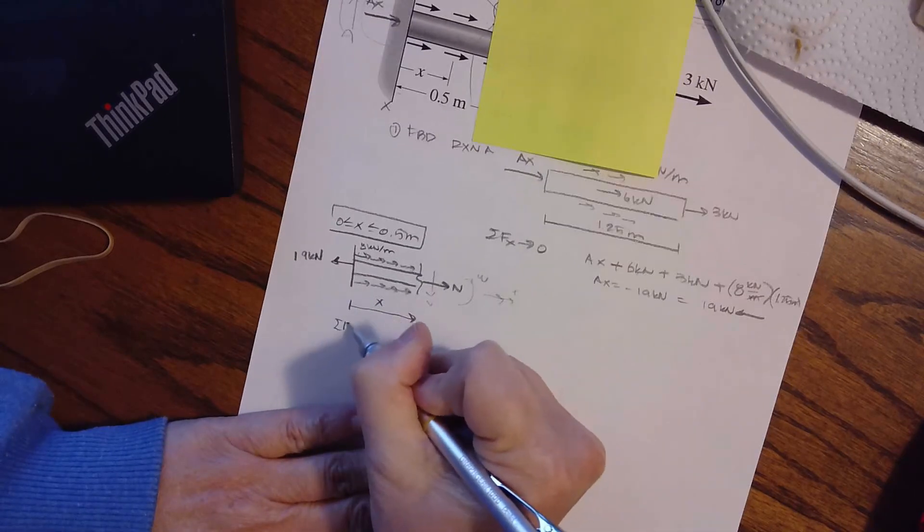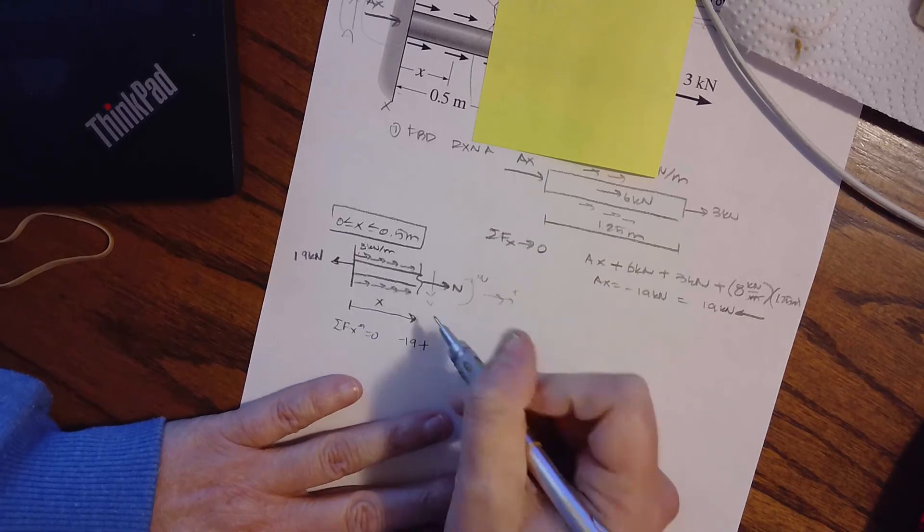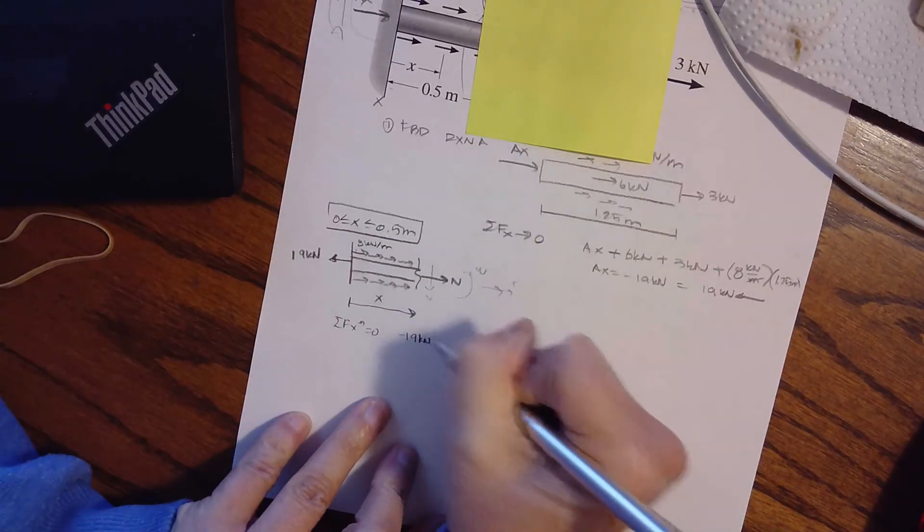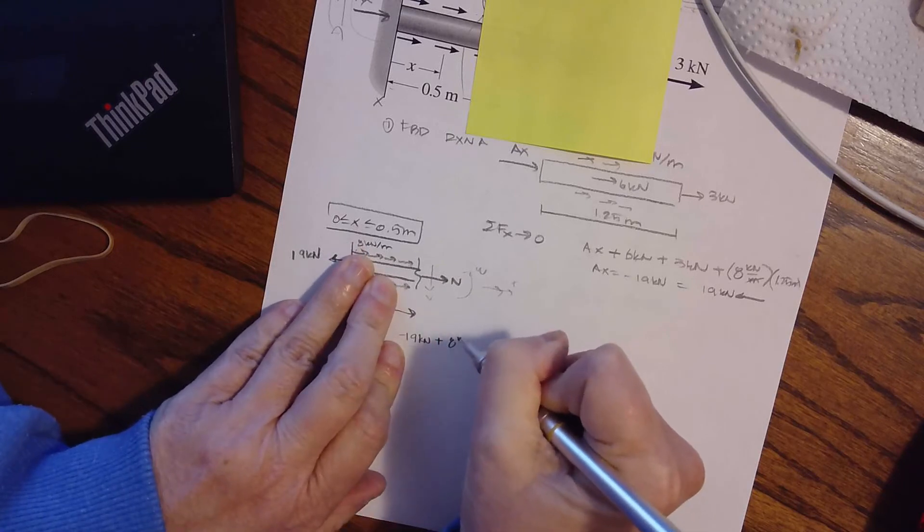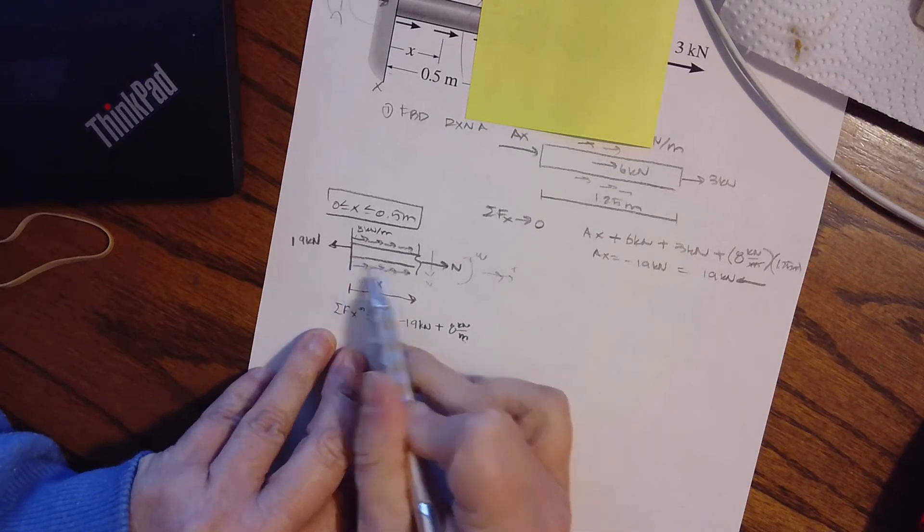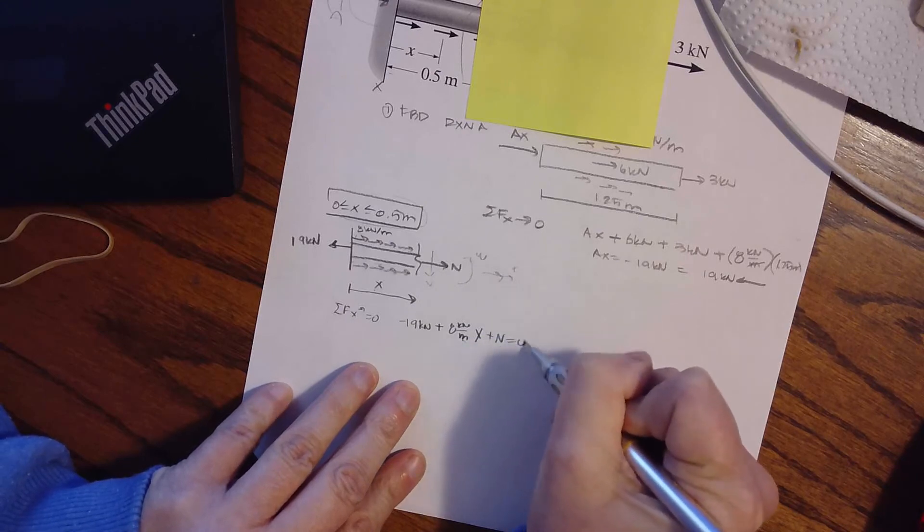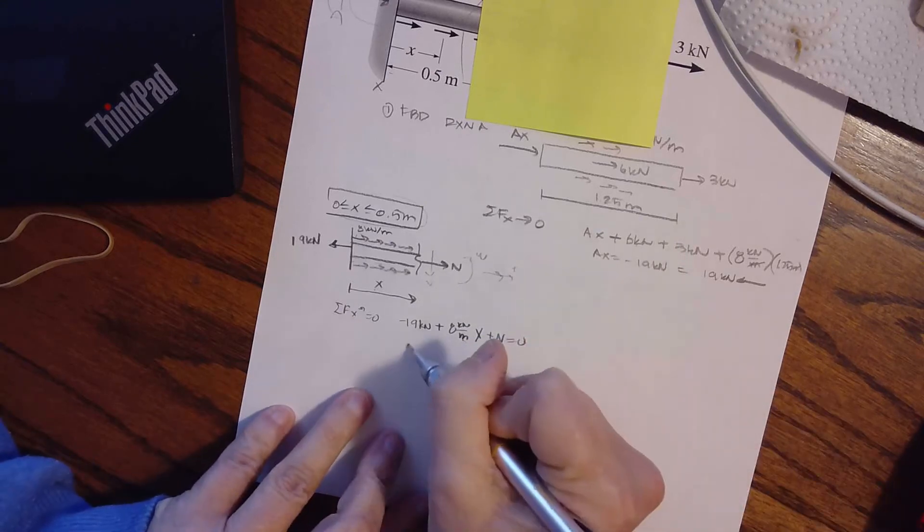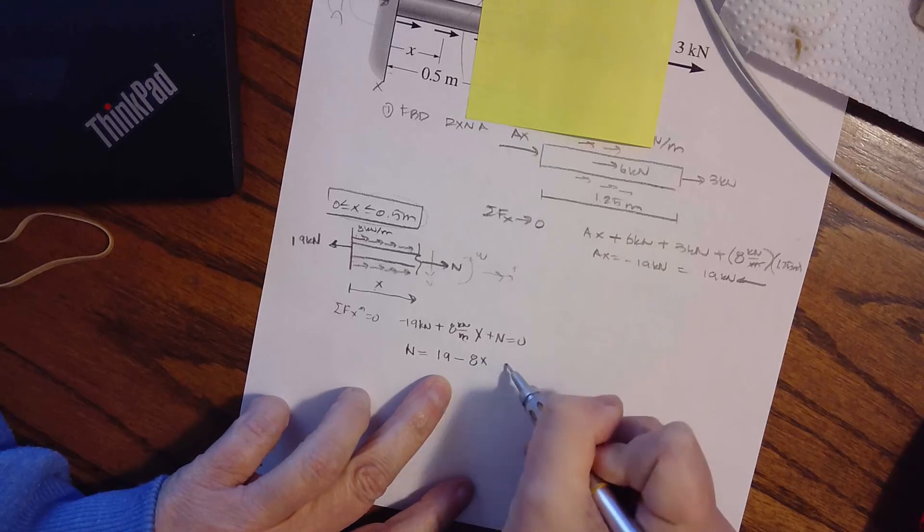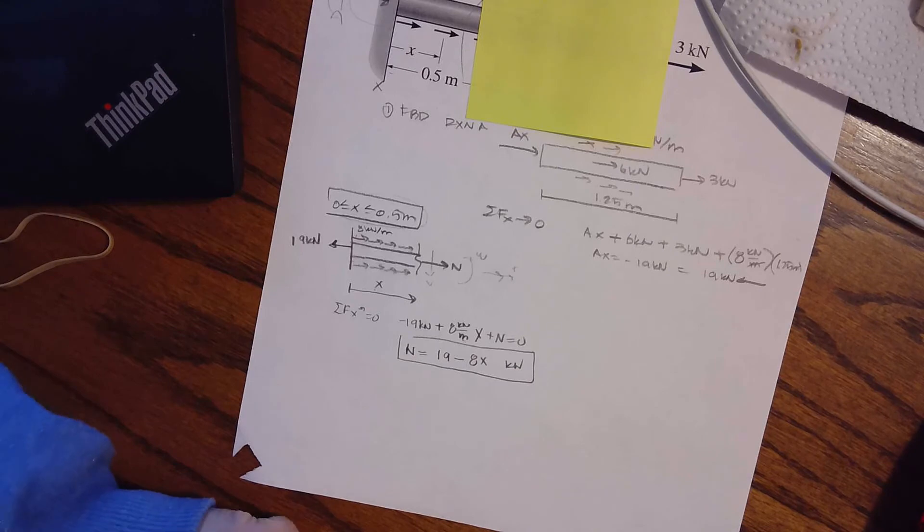Summing forces in the X direction equals zero, negative 19 kilonewtons, let's just keep up with our units. Negative 19 kilonewtons plus, well, I have eight kilonewtons per meter. So I have to get rid of the meters. Well, my X is variable in meters. So 8X plus N equals zero. If I rewrite this, I'm going to get that N equals 19 minus 8X kilonewtons. And there's my equation for my normal force as I am going down the length of the beam.